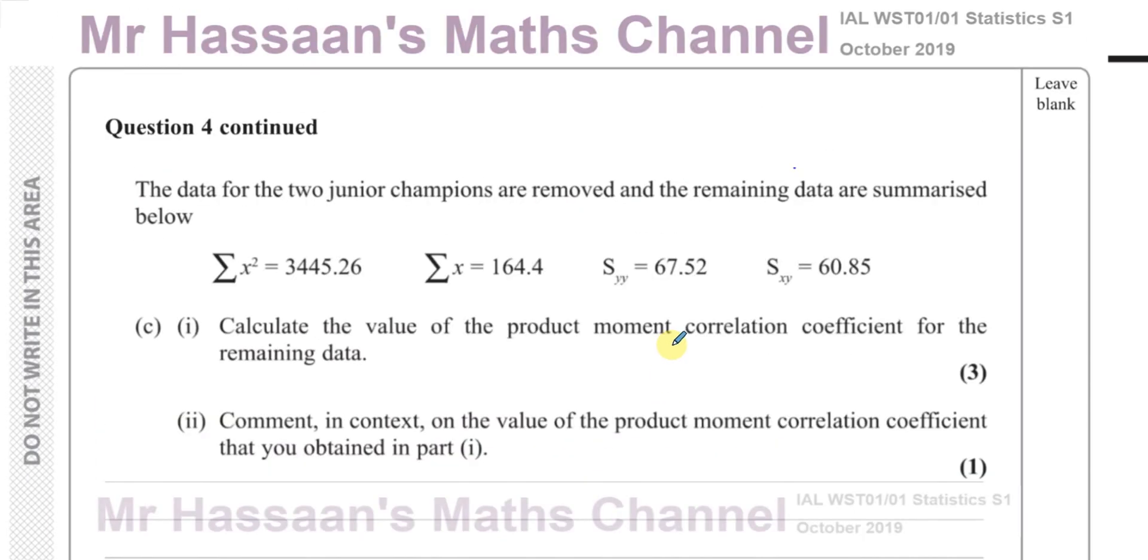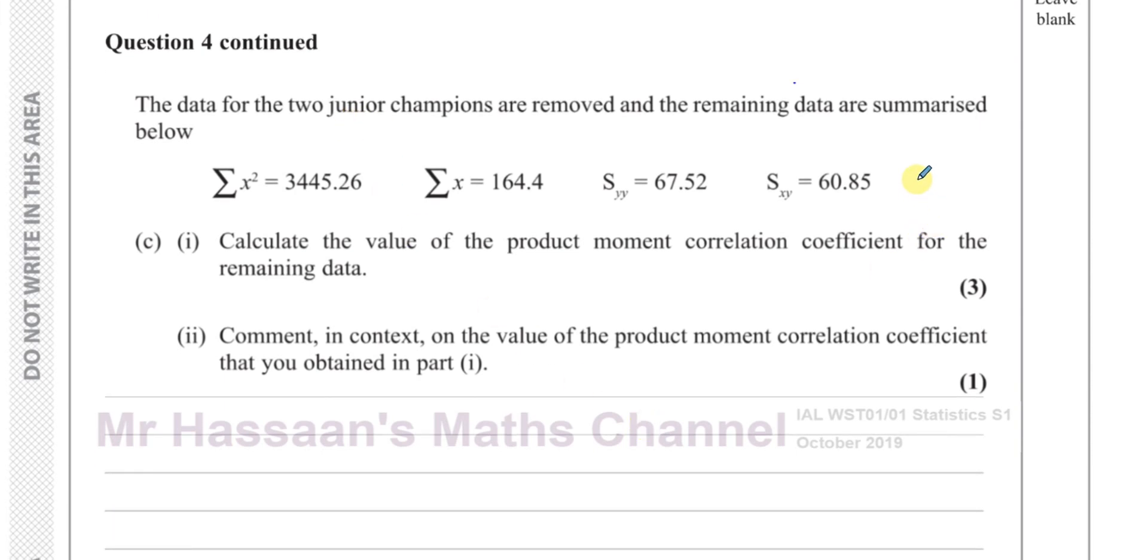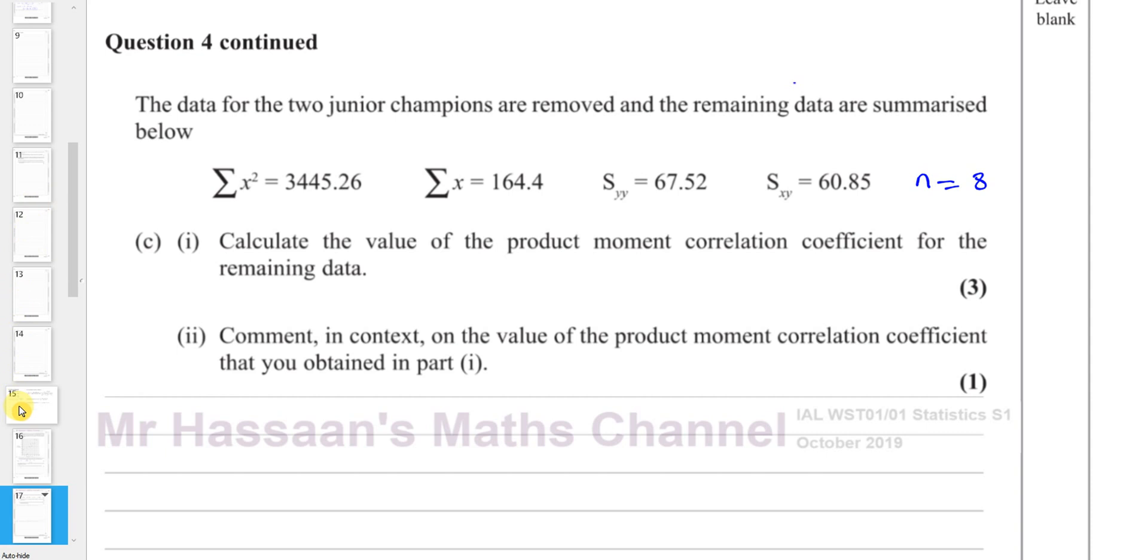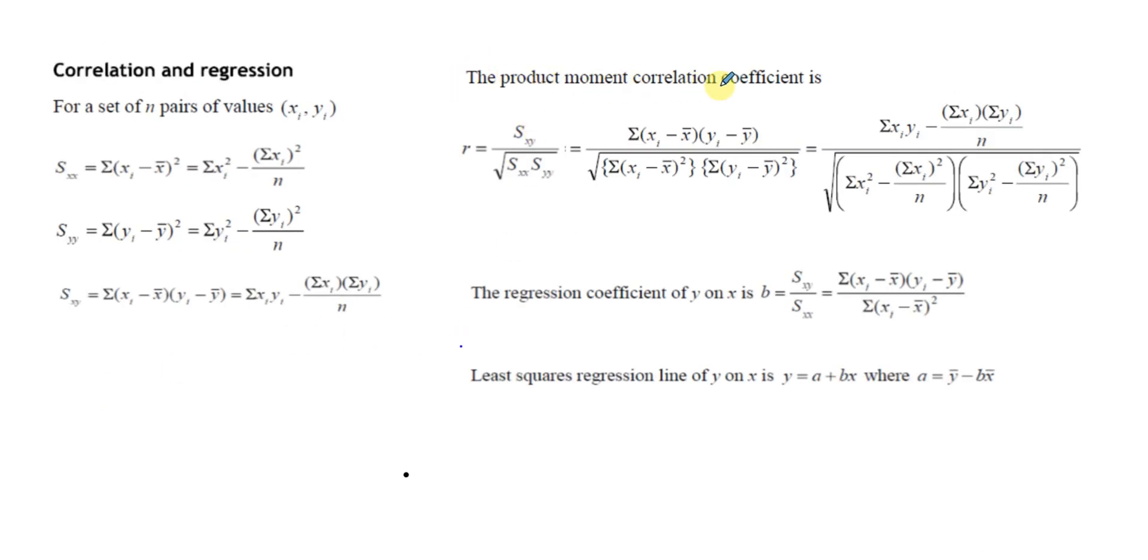So now, basically, the two junior champions, their times were removed. So now, there were 10 students in the beginning, now those times were removed, now there's 8 students. And we want to find the value of the PMCC. Now, to find that, we can go to the formula book. You go to the formula book, and you see in the formula book, you have this stated. The product moment correlation coefficient is given by these formulae here. Now, the one we're interested in is just this first part of it. That's what we're going to be using in this question, because that's what we've been given.